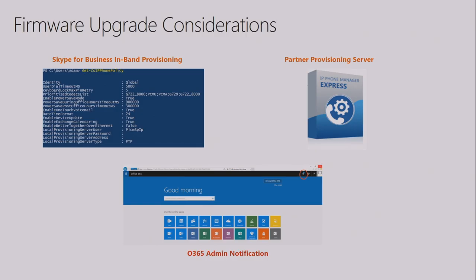Let's look into firmware upgrade considerations. When you create a tenant, by default that tenant has device update enabled. You can go and change that using PowerShell commands in Skype for Business, setting it to false. The reason is customers usually don't want unmanaged updates — they need a managed process: download the firmware, test it, evaluate it, and when happy, push it to different branches and users on their own terms, not having all users receive upgrades automatically whenever firmware is available.